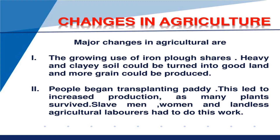Point number two: people began transplanting paddy. It was a very innovative idea and it led to increased production, as many plants survived. Slave men, women, and landless people were working. People were happy because agricultural cultivation became very good, and kings were also happy to collect the taxes regularly.